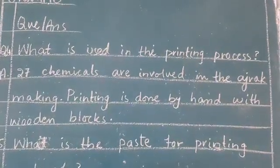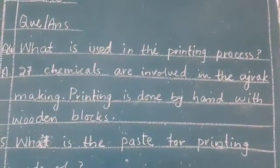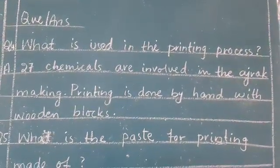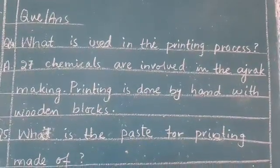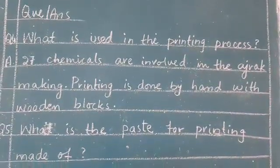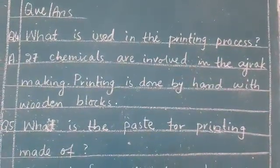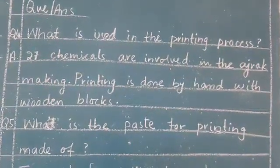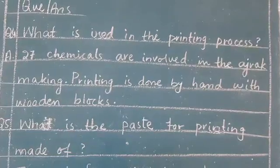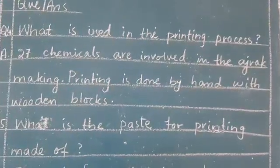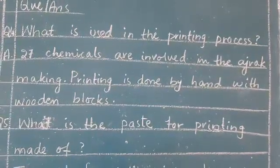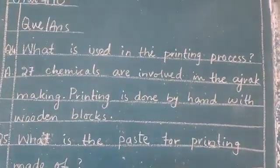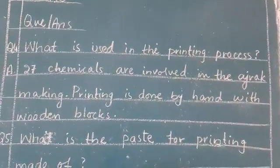What is used in the printing process? The answer is: 27 chemicals are involved in the ajrak making. Printing is done by hand with wooden blocks.